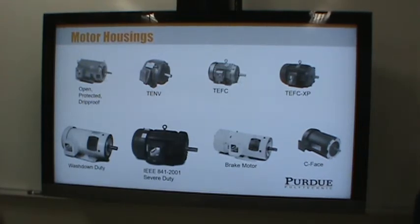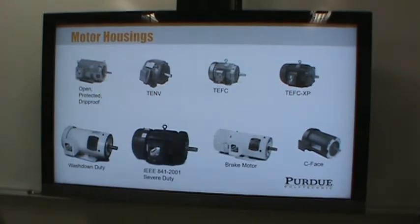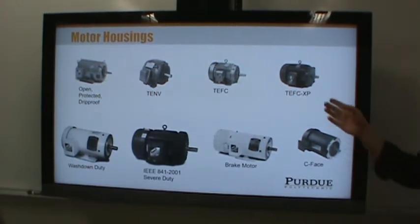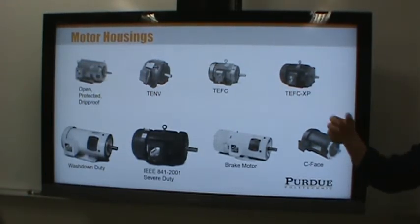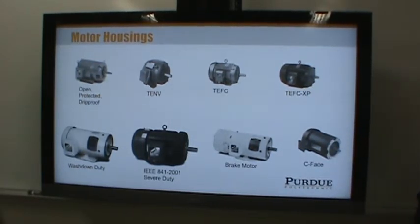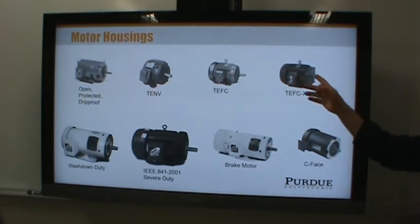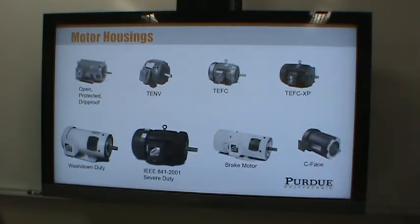If it's totally enclosed, how do you do maintenance? Typically you don't — if the motor stops working you take it out, put another one in, and send the old one to a motor repair shop. Unless the organization is huge and has its own motor shop, they typically don't repair motors in-house. The manufacturer may include a lubrication port if lubrication is intended.